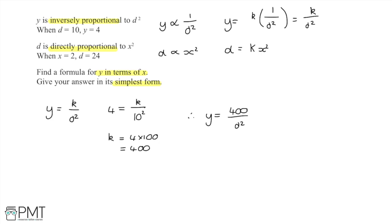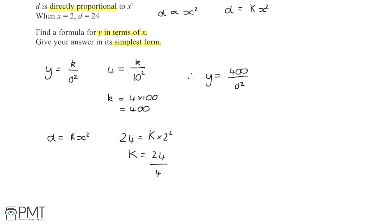Now I'll work out d using the second equation. Taking d equals capital K times x squared and substituting the given values — d is 24 and x is 2 — I get 24 equals K times 4. So this constant K is 24 divided by 4, which is 6. I can therefore write d equals 6x squared.